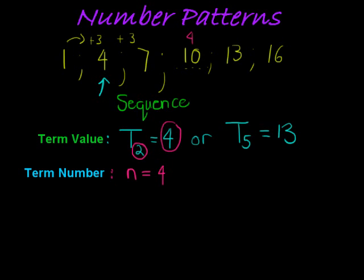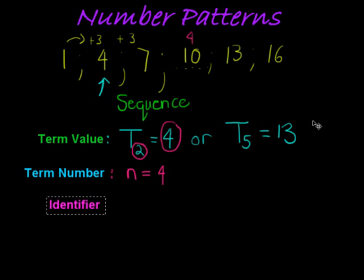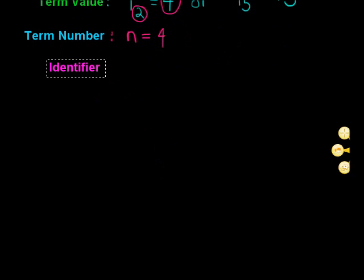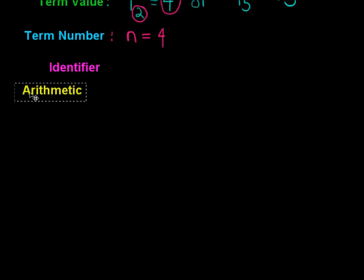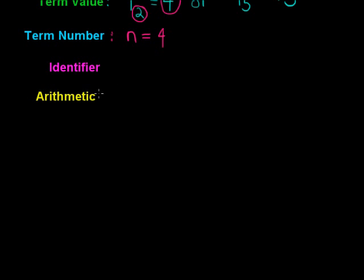The next thing we have is an identifier. The identifier tells us what type of number pattern we're dealing with. We work with three types. The first is arithmetic, and this type of number pattern has a constant difference — that is its identifier, a constant difference.